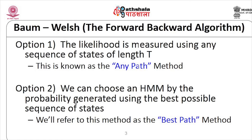The likelihood can be measured using any sequence of states of length T — this is the any-path method used in the forward algorithm (Baum-Welch). Alternatively, we can measure probability using the best sequence of states — this is the best-path method used in the Viterbi algorithm for decoding. The any-path method is used for evaluation and the best-path method is used for decoding.